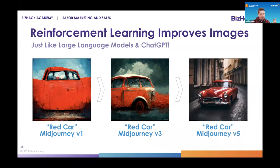This to me is the most exciting and shocking thing here. This red car example is just a basic prompt put into Midjourney, which has existed for about five years. On the left-hand side is V1, the middle is V3, and the right-hand side is V5 — the same prompt: 'red car.' We went from something that looks like a four-year-old child drew it, and then on the right-hand side we have what is a shockingly photorealistic picture of a car.